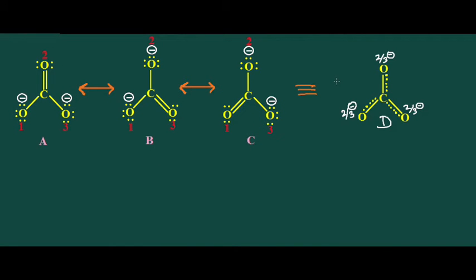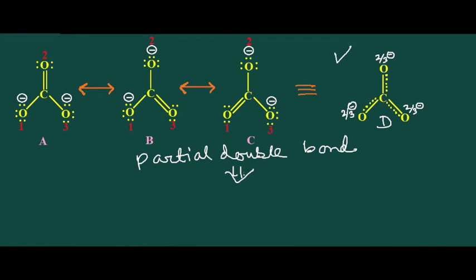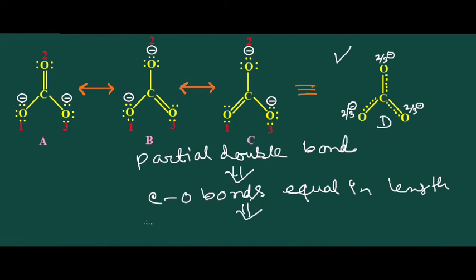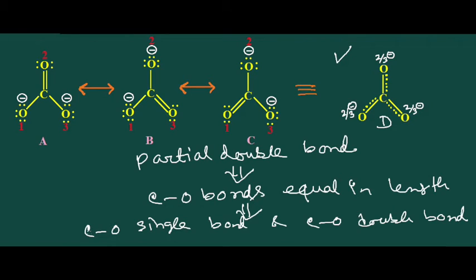The actual structure of carbonate ion looks like this. The dotted lines indicate the partial double bond character in all the carbon-oxygen bonds, meaning all the carbon-oxygen bonds are equal in length. This bond length is in the range between a carbon-oxygen single bond length and a carbon-oxygen double bond length. So this explains the experimental findings of carbonate ion, and structure D is the actual structure.